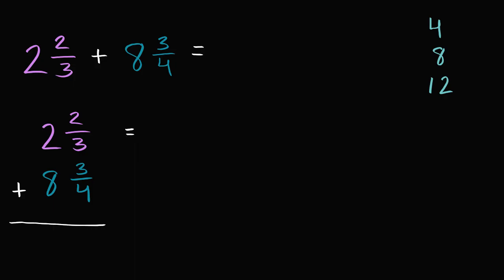So this is going to be equal to two and something over twelve. Now what would be that something over twelve? To go from three to twelve in the denominator, we multiply by four. So we have to multiply the numerator by four as well. Two times four is eight. Two thirds is the same thing as eight twelfths. So two and two thirds is the same thing as two and eight twelfths.